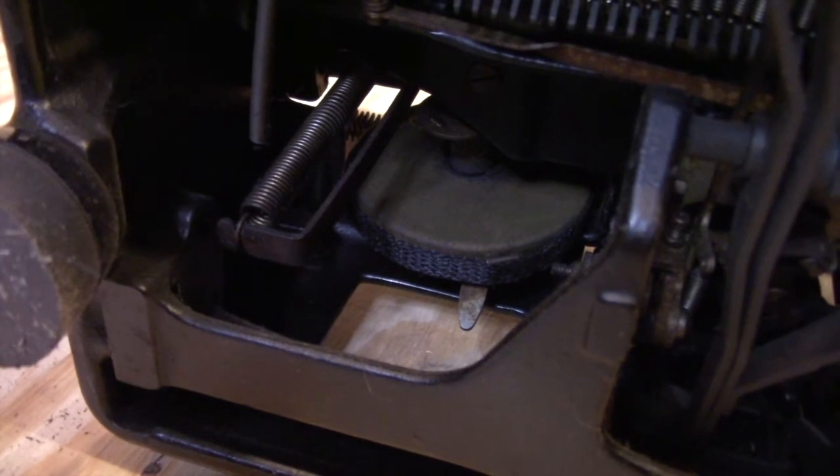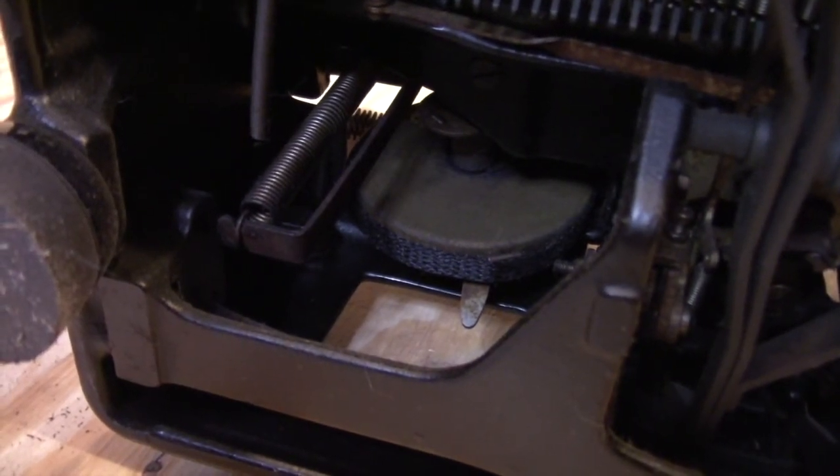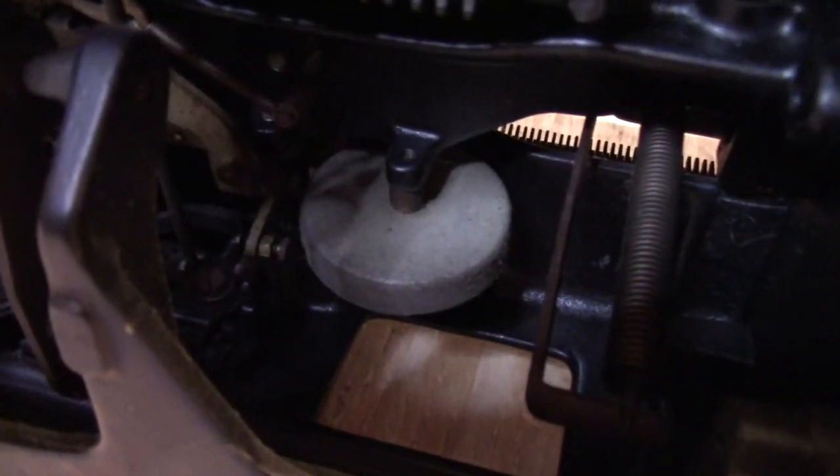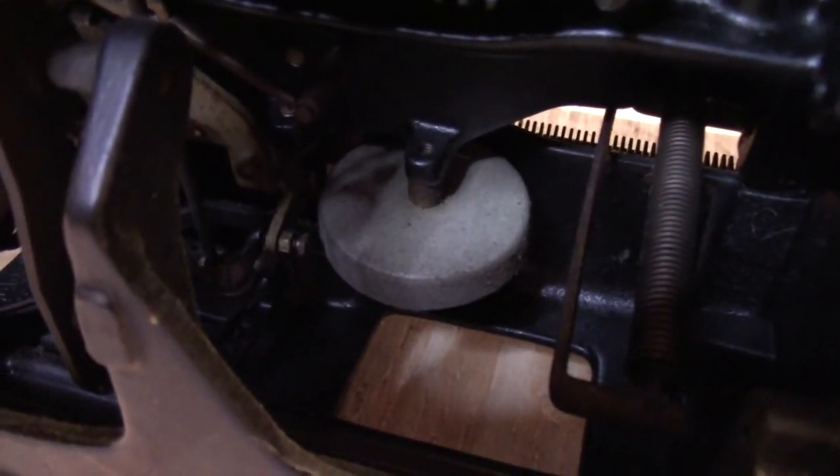And here's a close-up of some of those springs so you can kind of get a better idea. And from this perspective, you can see the carriage return ribbon on this side, and then the end-of-the-line bell on the other side.